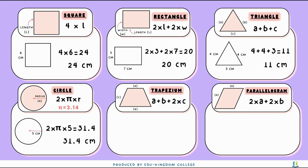For a trapezium, the shorter line on top is 7 centimeters, the longer line at the bottom is 9 centimeters, and the length on the two sides is 6 centimeters. So we have 9 plus 7 plus 6 times 2, which gives us 28 centimeters.